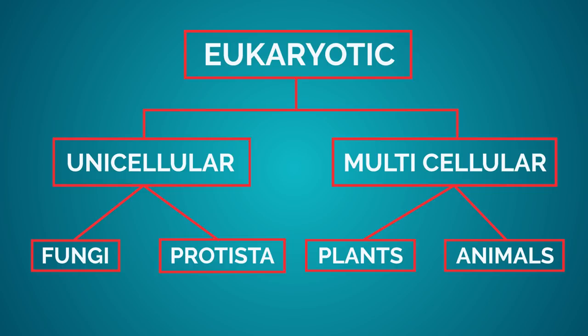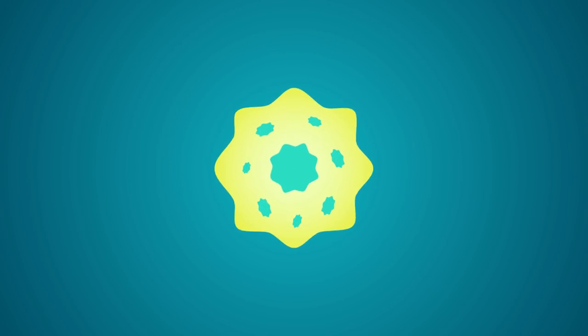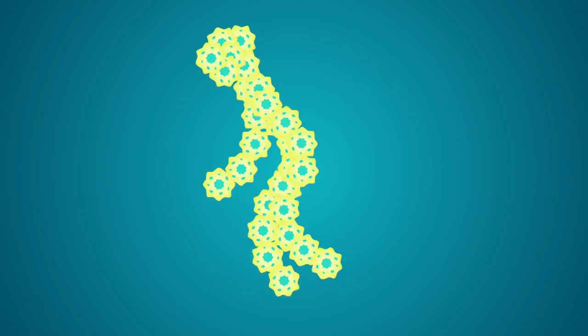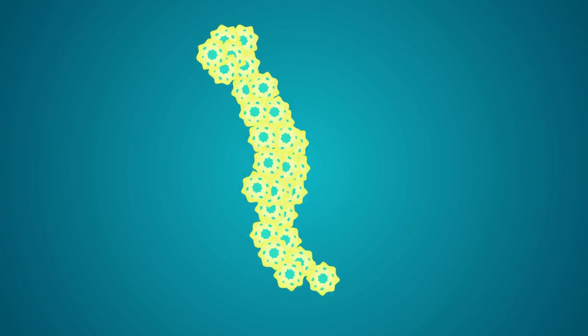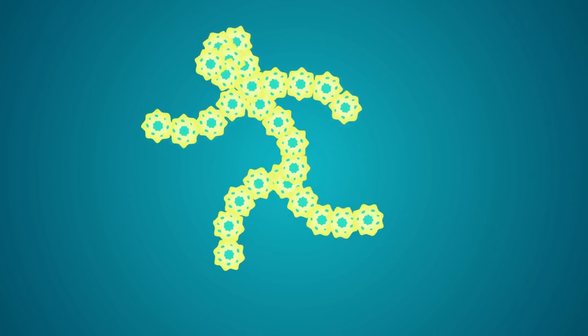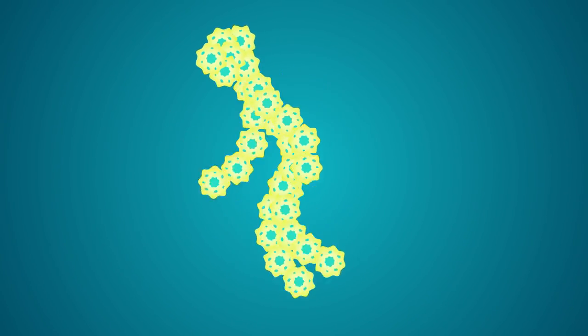The statement that all prokaryotes are unicellular is up for discussion, however, as there is a lot of evidence showing that bacteria species can aggregate together and divide labor, thus forming a colony of cells that work more efficiently. This is a multicellular characteristic.